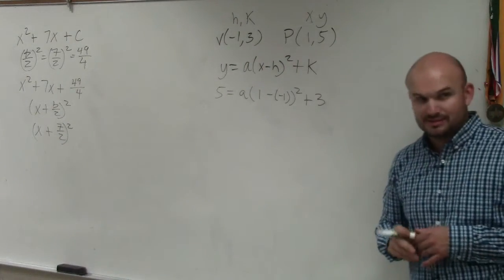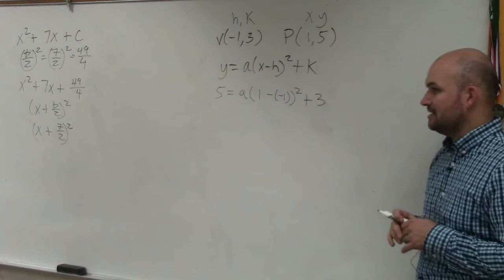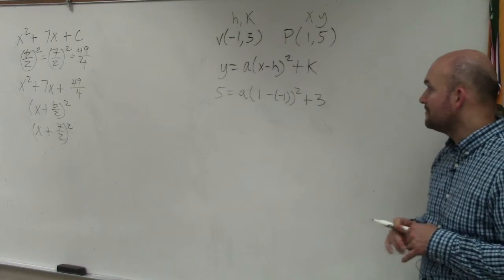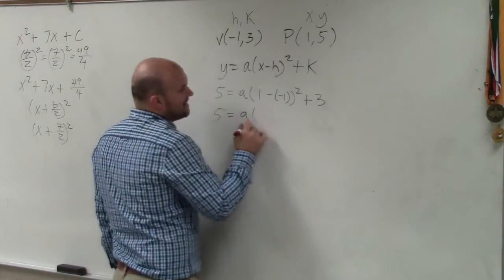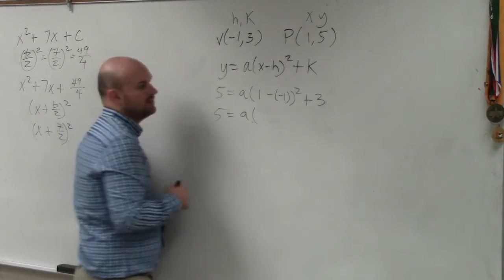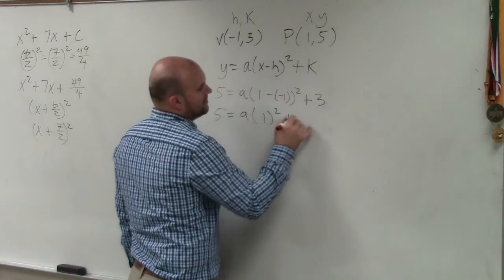Do you guys notice my use of parentheses? It's very helpful. Makes a lot of mistakes, especially when you're texting on your phone. Now we just go ahead and simplify using order of operations. 5 equals a times 1 minus negative 1 would be 1 plus 1 squared plus 3.